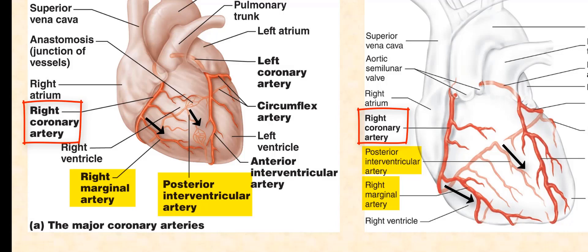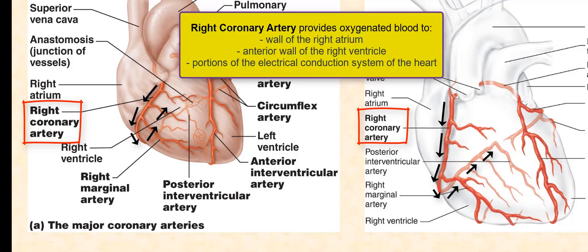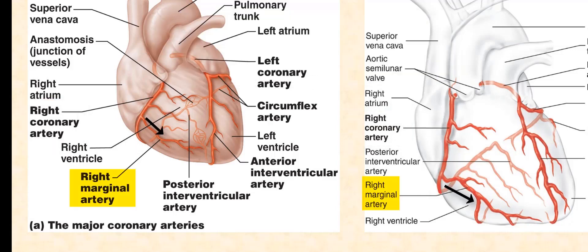Please note there are additional arteries that branch off the right coronary artery, but we will only focus our attention on these two arteries. The right coronary artery can be found along the atrioventricular groove or coronary sulcus. It partly encloses or wraps around the heart and continues to the posterior side of the heart. The right coronary artery supplies oxygenated blood to the walls of the right atrium, the anterior wall of the right ventricle, and portions of the electrical conduction system of the heart.